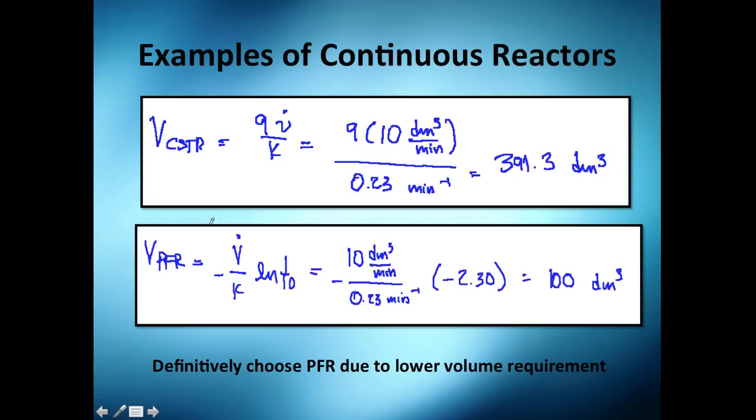Now let me just once again check the equations I got from my mathematical development. I substitute data: 9 times 10 cubic decimeters per minute, all this divided by this constant which is 0.23 per minute. So thank God I can cancel this minute and minute, and my solution ends up being cubic decimeters—391.3, which is let's say 390 liters.